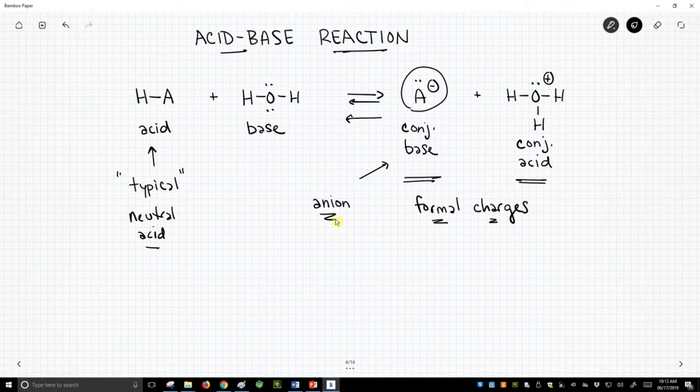We will see other examples where we won't have a neutral acid, and we'll talk about those. But typically, we have a neutral acid, and that forms an anionic conjugate base.